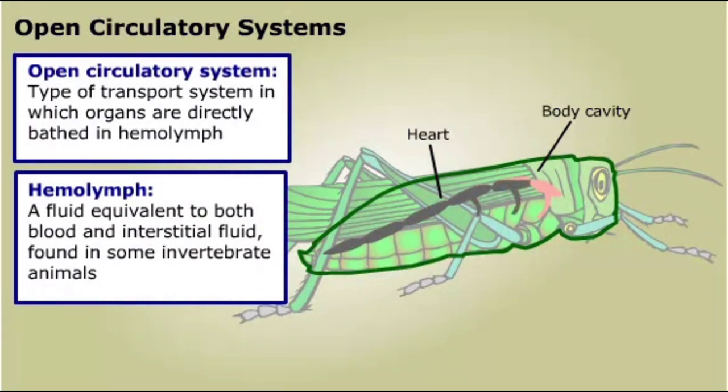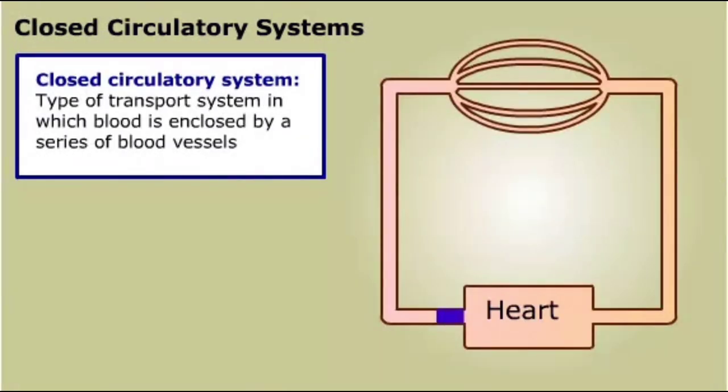Animals with open circulatory systems do not have an extensive network of blood vessels that infiltrate the organs. A closed circulatory system encloses the blood in a system of tubes called arteries, veins, and capillaries in vertebrates. In invertebrates, they are often referred to simply as vessels.